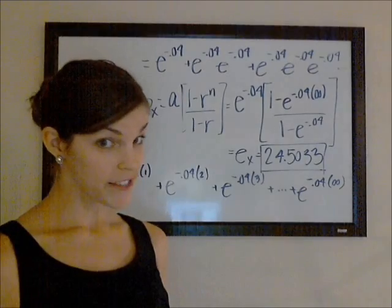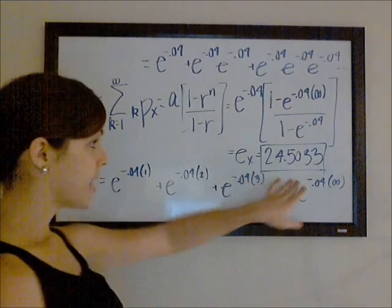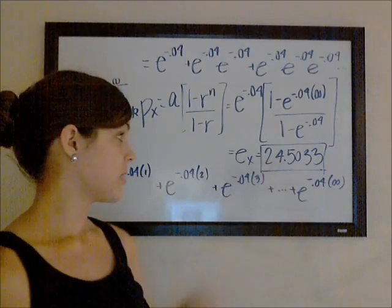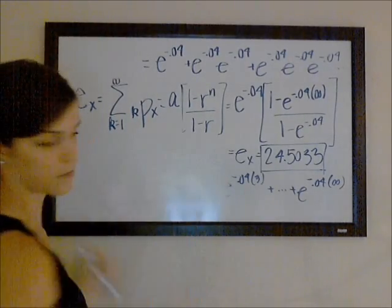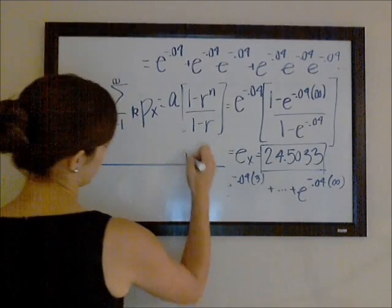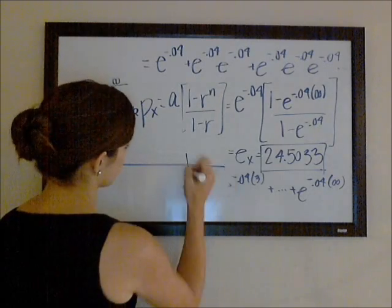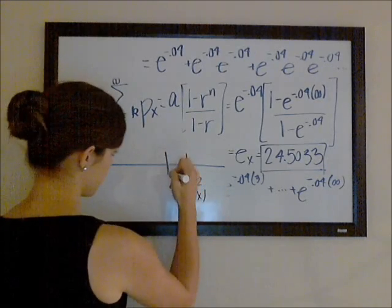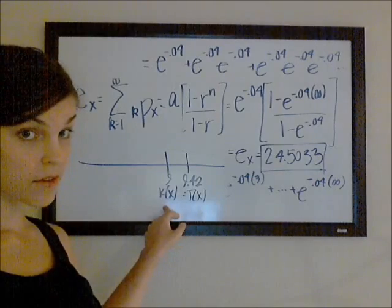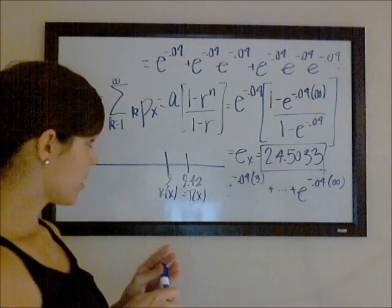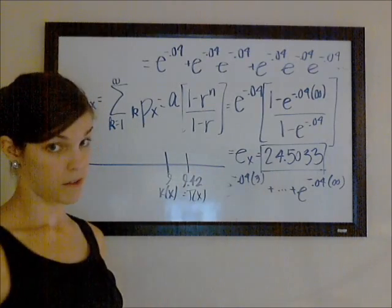The other thing that is probably way more useful to recognize is that our curtate expected future lifetime should be a little bit less than our continuous expected future lifetime, which we said was 25, right? Because if this is your future lifetime, say it's like 9.42, this is really what your future lifetime is, T(X). The number of whole years that you live, the number of completed years that you live, is going to be less than that. So we're looking at the curtate expected future lifetime, we're ignoring this whole fraction right here, so it's going to end up being a little bit less.